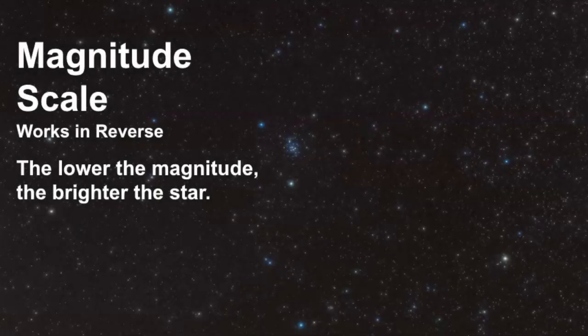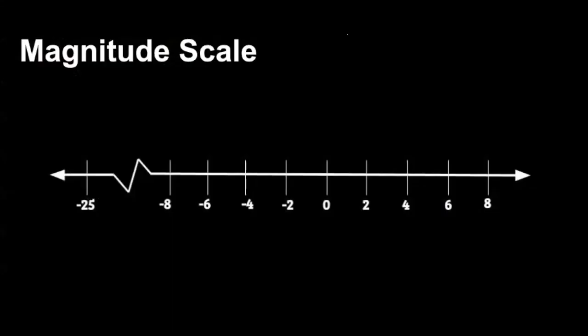Let's look at some examples of apparent magnitude on a number line. Remember the scale works in reverse — the lower the magnitude, the brighter the star. Vega, in the constellation Lyra, has a magnitude of 0, making it a pretty bright object. Polaris, the North Star, has a magnitude of 2, so Vega is brighter than Polaris even though Polaris has the bigger number — that's the inverse relationship.